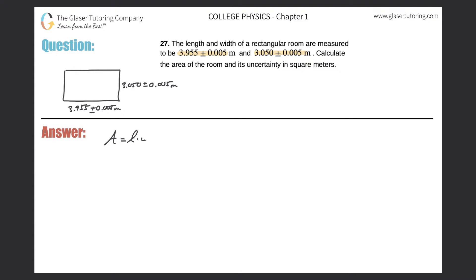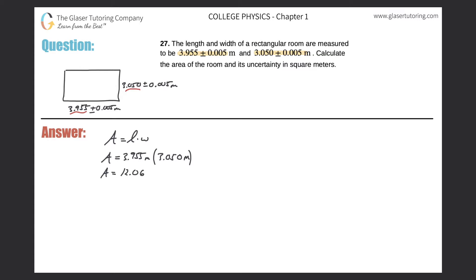The area of a rectangle is length times width. You're going to use the measurement values — the base values of your measurement with its associated uncertainty. So let's plug them into the area equation. Area is equal to 3.955 meters multiplied by 3.050 meters. So the area is just equal to 3.955 times 3.050, which works out to be 12.06275.